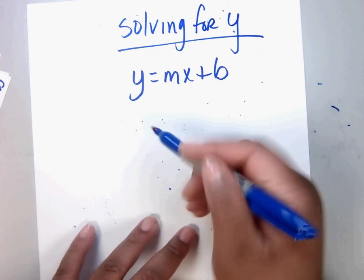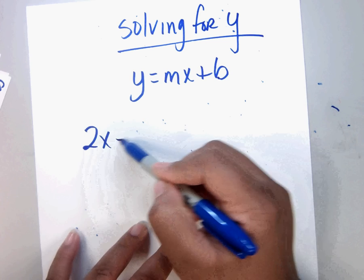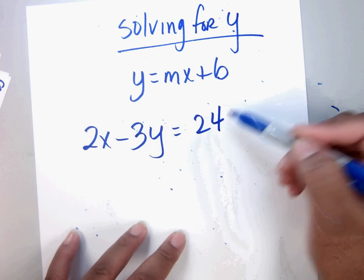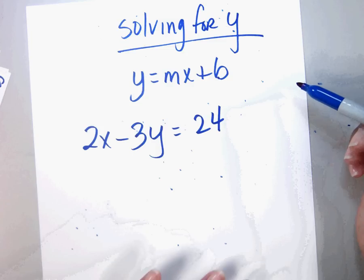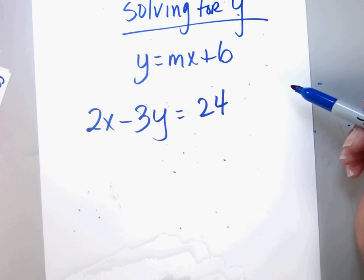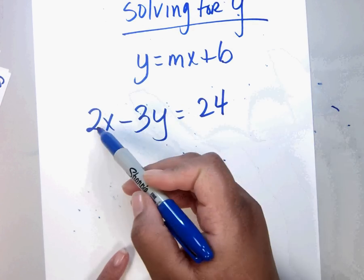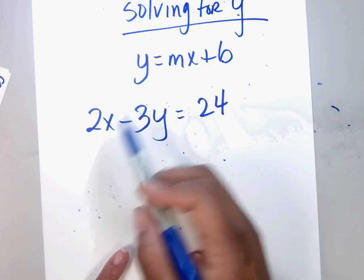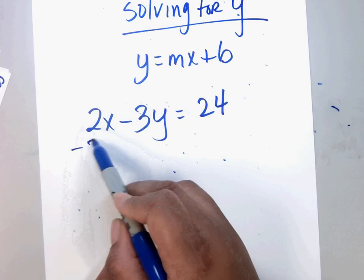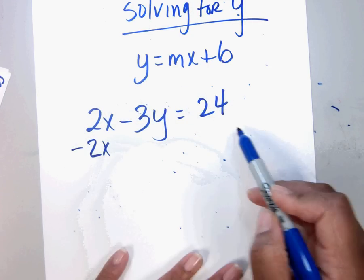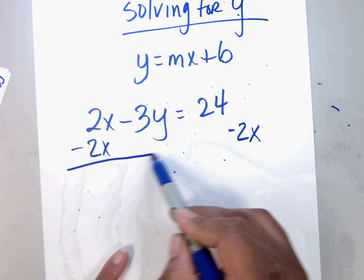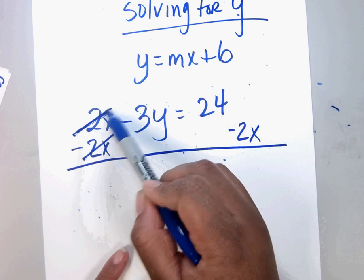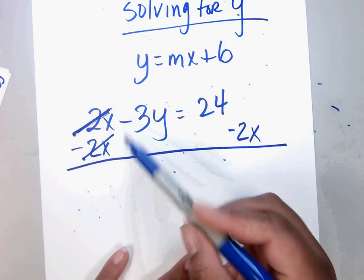Given 2x minus 3y equals 24, how do we do this problem? Move the x over to the other side. Since he's positive, we subtract him — it cancels. Bring down the negative.